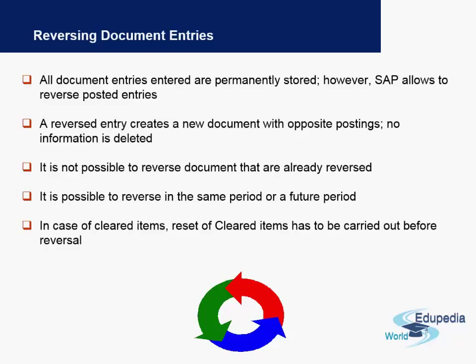All document entries in the system are permanently stored; however, SAP allows you to reverse these posted entries. Every reverse entry will have an opposite posting, but no information from the past is deleted. It is not possible to reverse a document which is already reversed — in that case, a completely new document needs to be posted. You can reverse in the same period or in a future period; for example, if an employee made a posting in August 2015, they can reverse it in December 2015 during year-end closing.